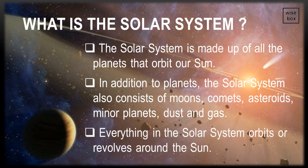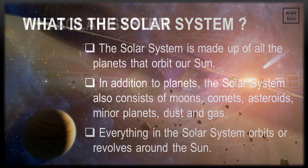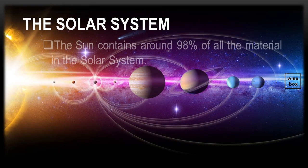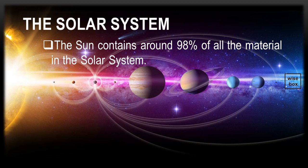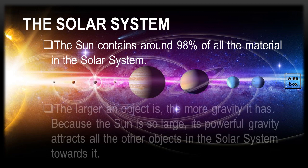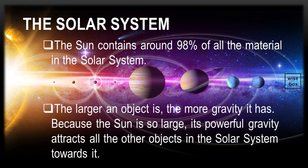Everything in the Solar System orbits or revolves around the Sun. The Sun contains around 98% of all the material in the Solar System. The larger an object is, the more gravity it has. Because the Sun is so large, its powerful gravity attracts all the other objects in the Solar System towards it.